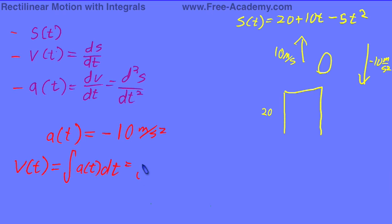So let's integrate this. The integral of negative 10 dt is going to equal negative 10t plus c. Don't forget your integration constant.